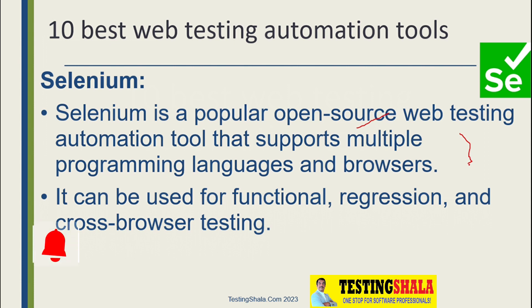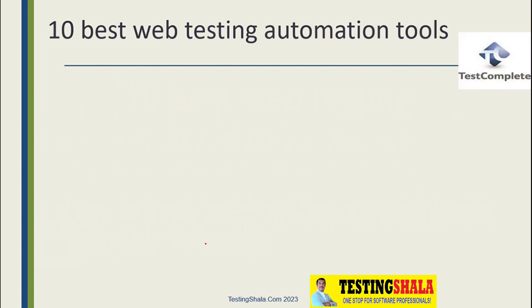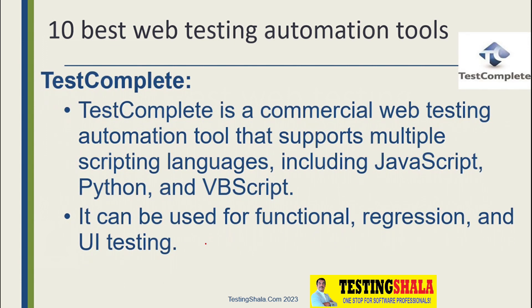In Selenium, we can write once and run it on multiple browsers. Selenium also supports multiple programming languages — it supports Java, C#, Perl, Shell, and so on. It can be used for both functional regression and cross-browser testing as well.